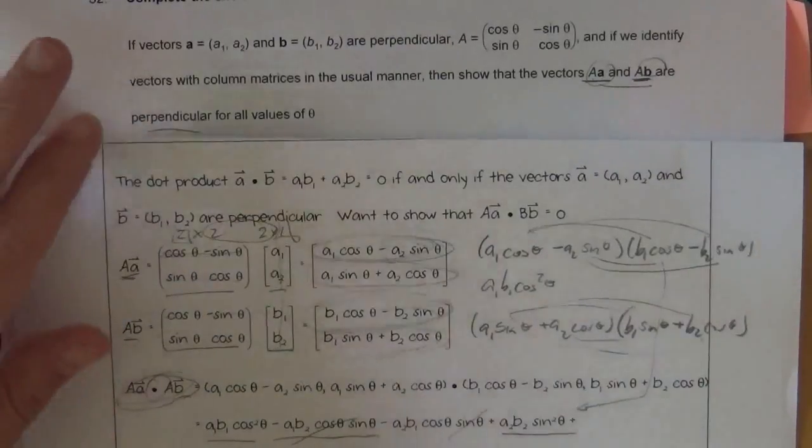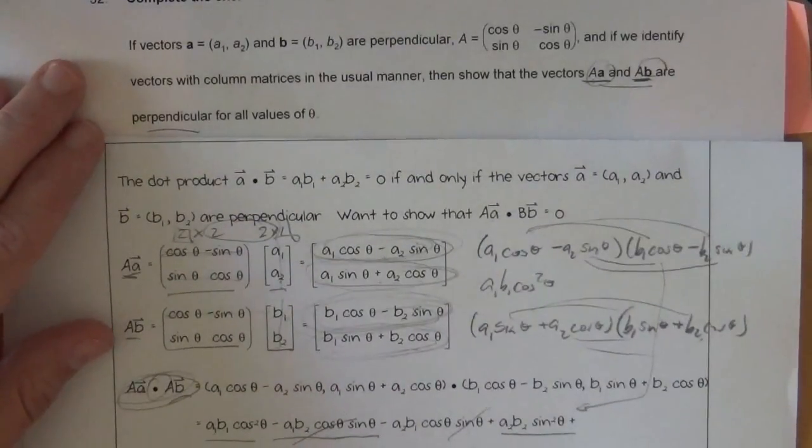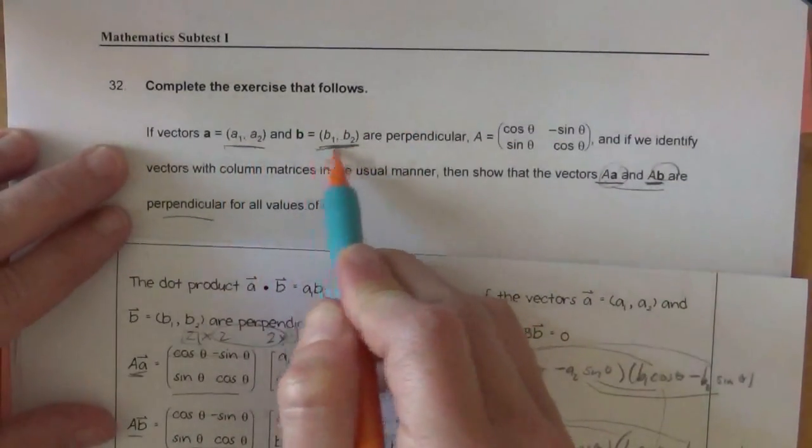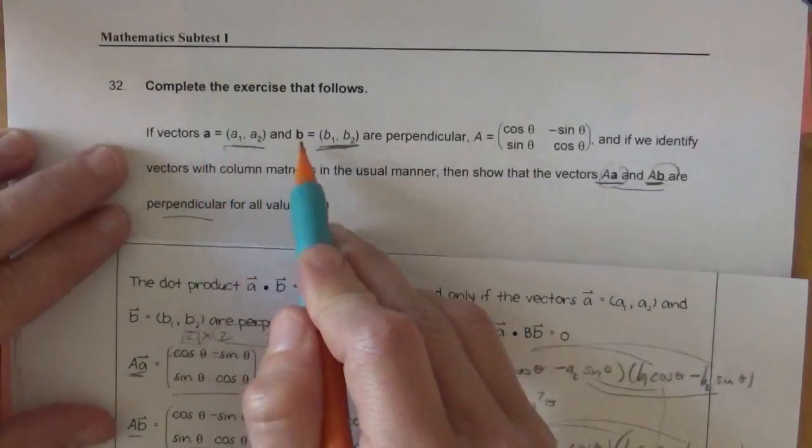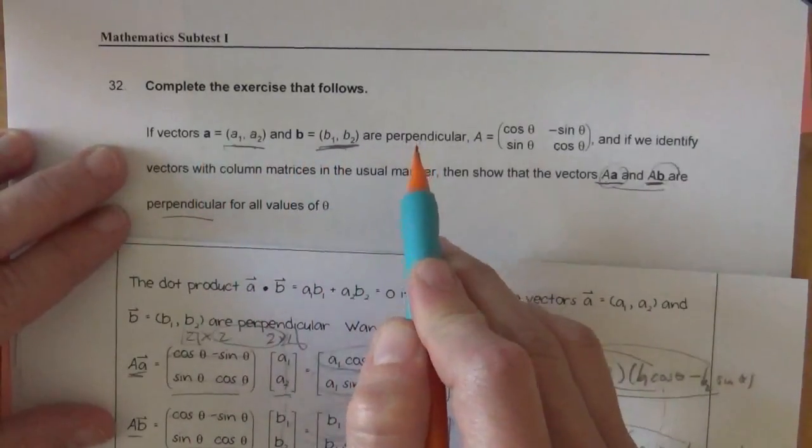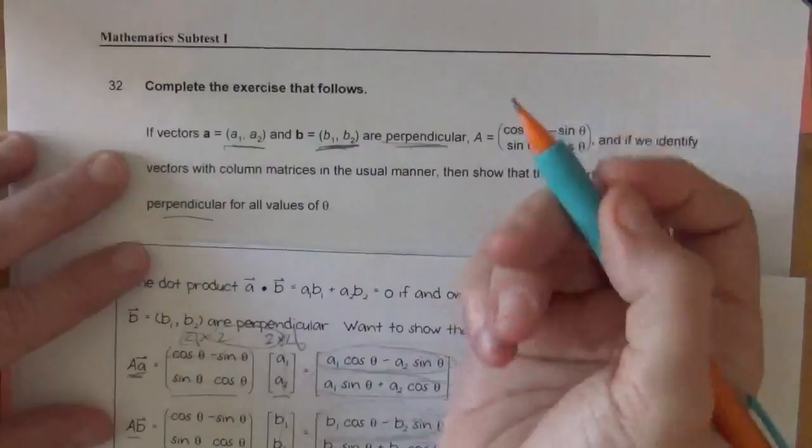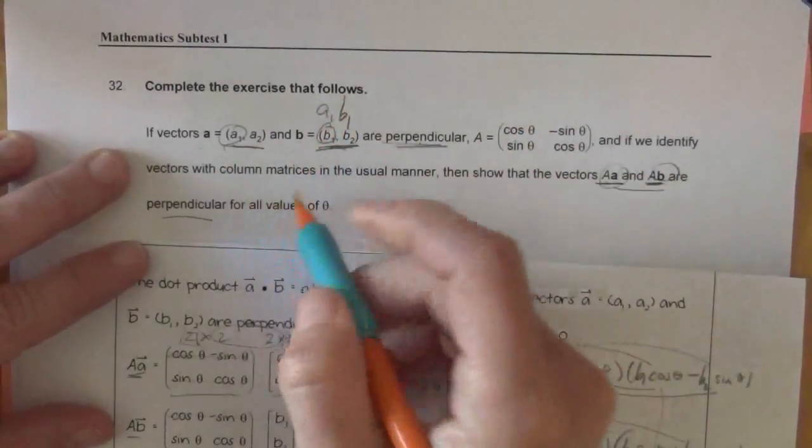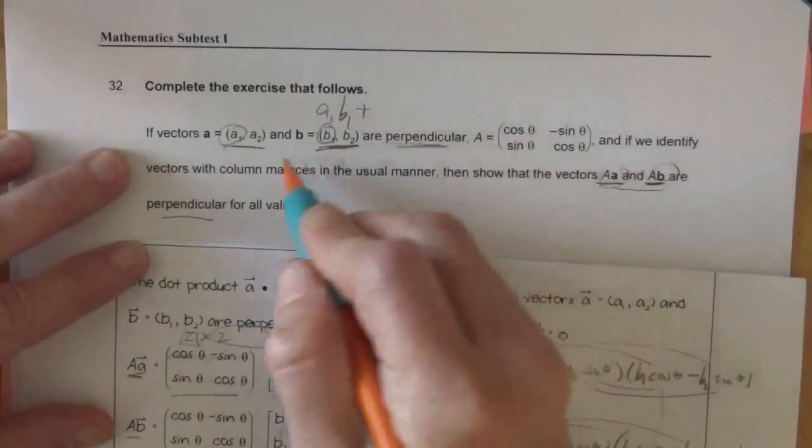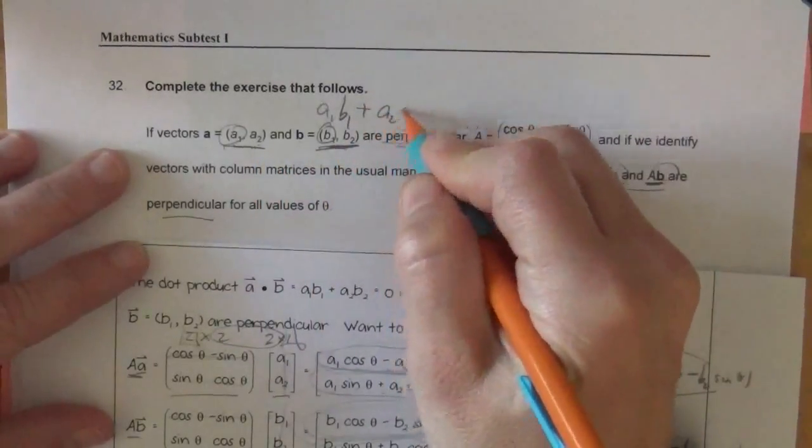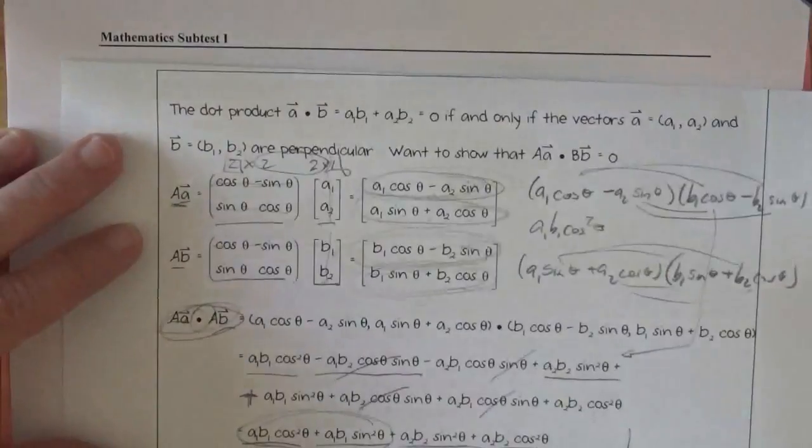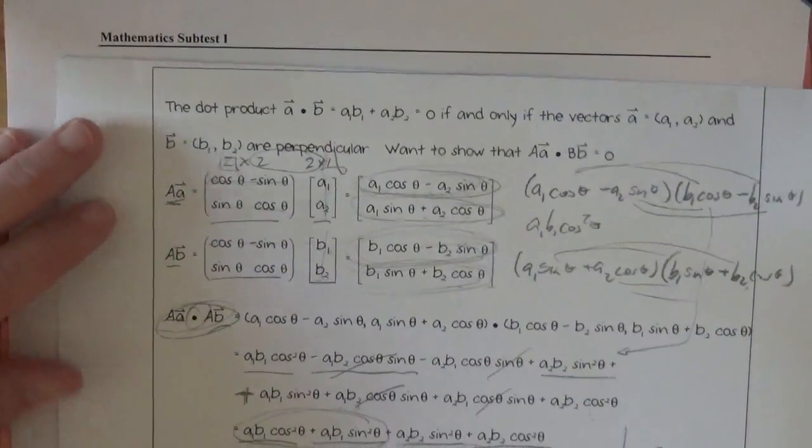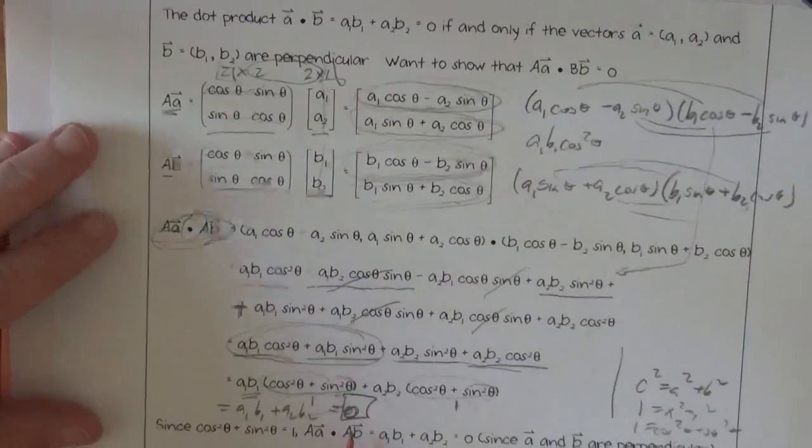But we do know that this mess should equal 0 because vectors A and vector B are perpendicular. That's given. So if they're perpendicular, their dot product is 0. So A1 B1, the x's added together plus the y's added together should be 0. And that is what we wanted to prove.